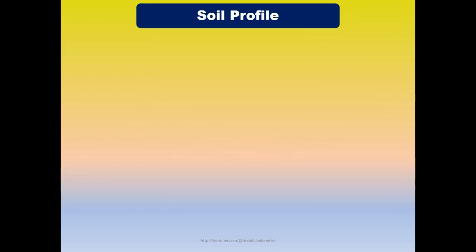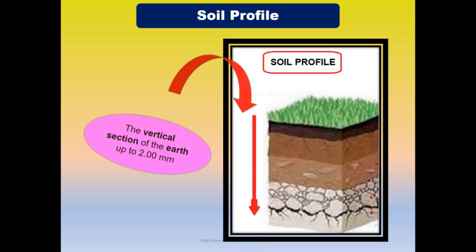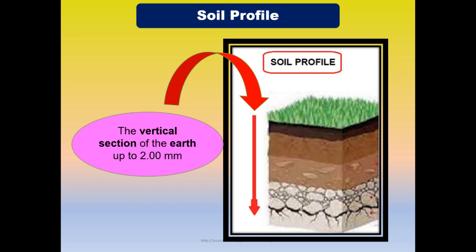There are two terms commonly used in soil microbiology: soil profile and soil horizons. Let's first define the soil profile. Soil profile indicates the vertical section of the earth up to 2 meters. If we look at the arrow, it clearly indicates the vertical section of the earth, and this vertical section shows the soil profile.